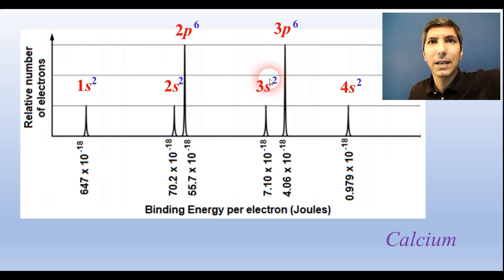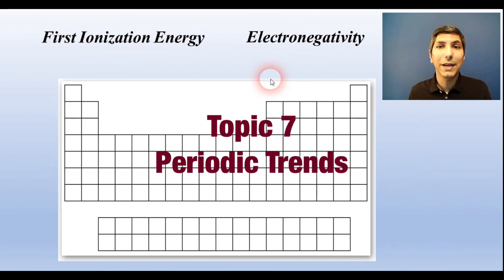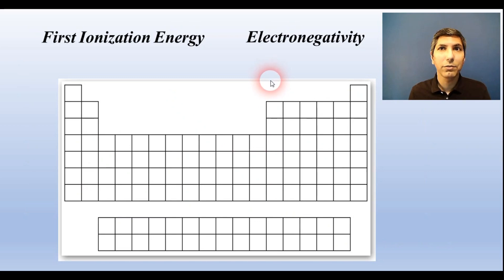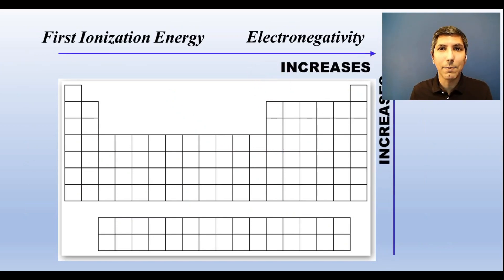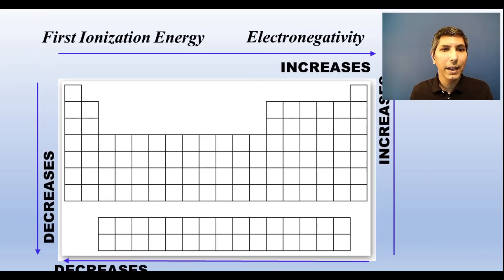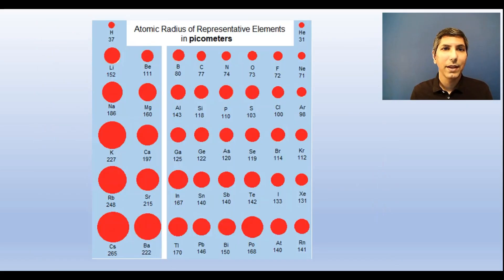Several trends in atomic properties can be predicted by looking at the periodic table. For example, ionization energy and electronegativity generally increase as you move to the right and top of the periodic table. And they decrease as you move to the left and bottom of the table. Atomic radius is the opposite. Atoms are smaller toward the top and right of the periodic table, and they are the largest toward the bottom and the left of the periodic table.